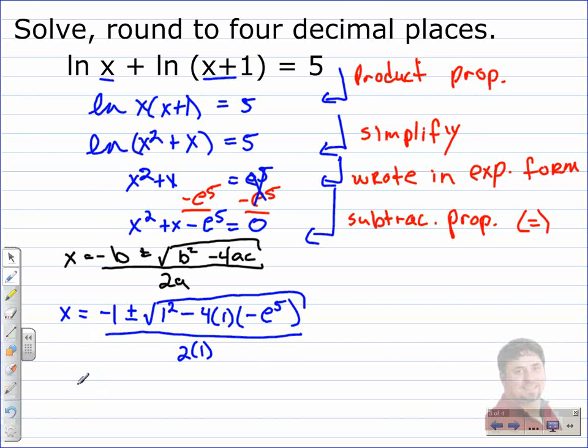At this point, I just use a calculator, a scientific or graphing calculator, either way. What I do is I calculate what's underneath the radical so I can take the square root of it. When I plug this into the calculator, this would be 4 times 1 times negative e to the fifth. I put it all in at the same time, used the square root. And what's underneath the radical gives us 5.5278 divided by 2. So I finish these calculations to get x being equal to 2.2639 or x being equal to negative 3.2639.